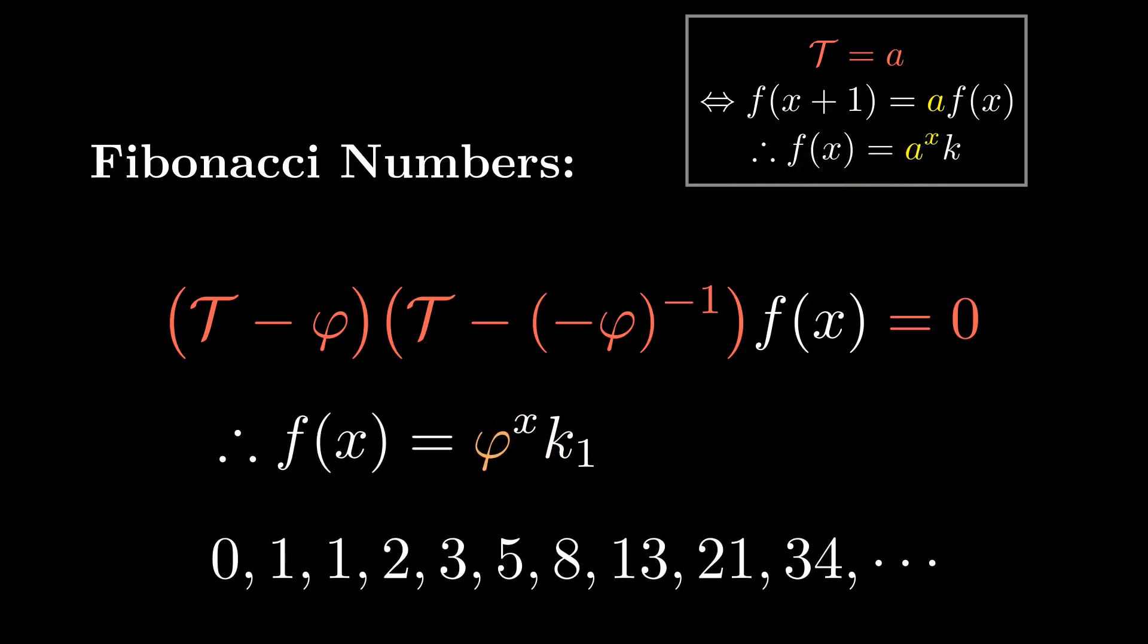So, using the same superposition principle we'd use for a differential equation, we find that f of x is equal to k1 times the golden ratio to the x, plus k2 times the conjugate golden ratio to the x, where the k's are constants.